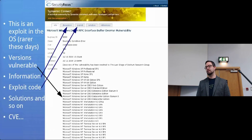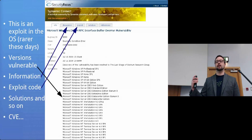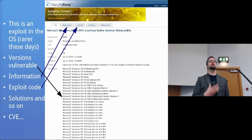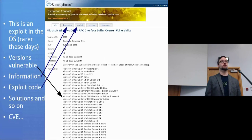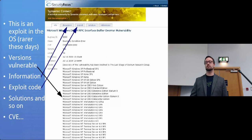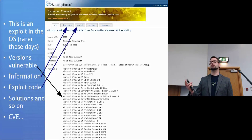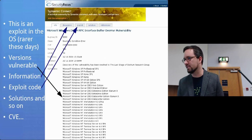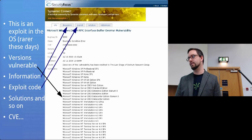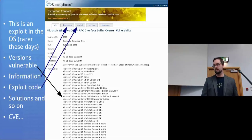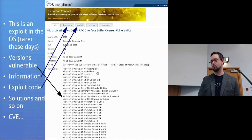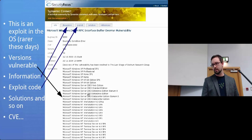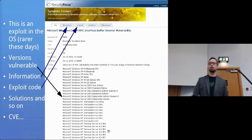Looking at an example: the RPC DCOM vulnerability. This is an actual vulnerability in the operating system itself. Someone at Microsoft years ago made a programming mistake, and the CVE was registered in 2003. Pretty much every version of Windows before that — Windows XP Service Pack 1 and earlier, Windows Server 2003 and earlier, Windows NT — all of those versions of Windows were vulnerable to attack.